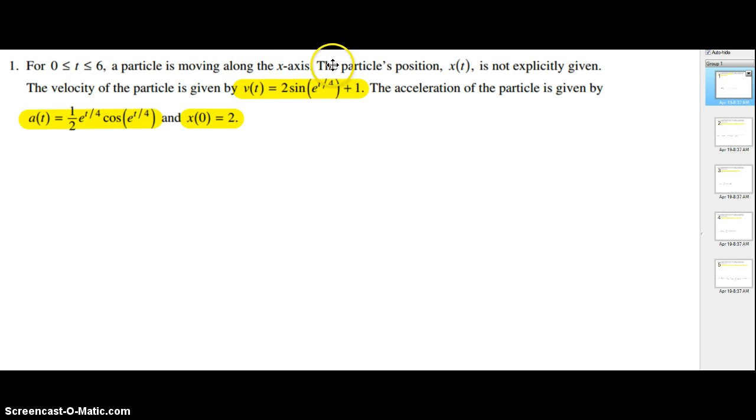As long as it's moving to the right, the velocity is positive. When it moves to the left, the velocity is negative. Its position is not explicitly given, but the velocity is given as v(t) = 2sin(e^(t/4)) + 1. The acceleration is also given as a(t) = 1/2(e^(t/4))cos(e^(t/4)), and v(0) = 2.